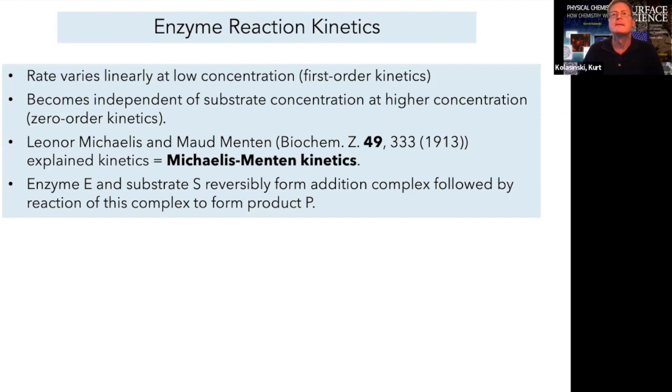In our discussion of the kinetics of enzyme reactions, let's take a look first at some observations that were made that we need to fit. Very often, the rate varies linearly at low substrate concentration. That is, we see first-order kinetics. But these kinetics become independent of substrate concentration at higher concentrations. In other words, they switch over to zero-order kinetics.